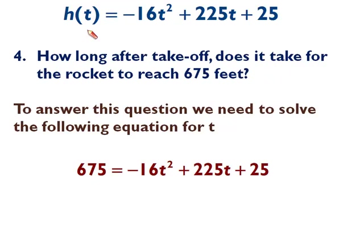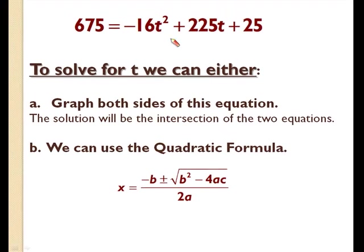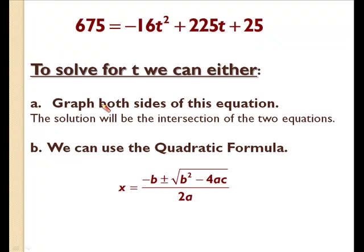Remember, h(t) represents the position of the rocket at any given value of time t. So we know the position of the rocket. The rocket is 675 feet above the ground. We need to solve for t to figure out the times when the rocket is at this height. We can solve for t two ways: we can graph both sides of the equation and the intersection of our graphs will represent our solution, or we can use the quadratic formula.